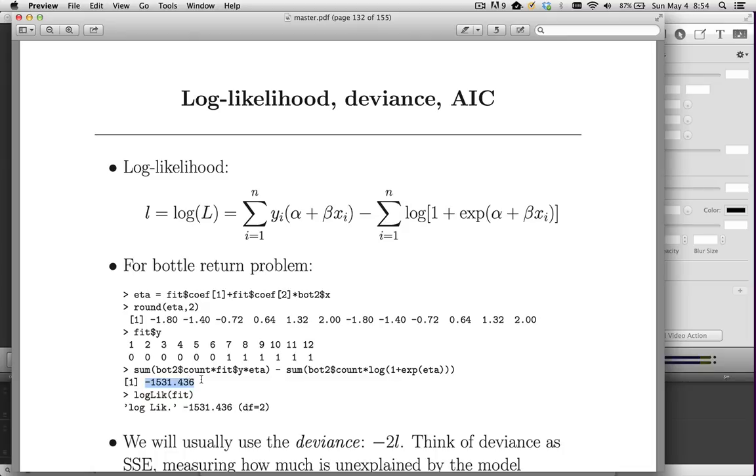So this term gives us the first sum, minus the second term, which is this. Now if you do this, you end up with this number, minus 1,531. Now, that's a lot of work. We don't usually want to do that. Instead, if you're really interested in the log likelihood, there's a function called log likelihood, which gives you that number. So the way to think about this is that this is the objective function value. We have made this number as large as possible when we did the maximum likelihood.